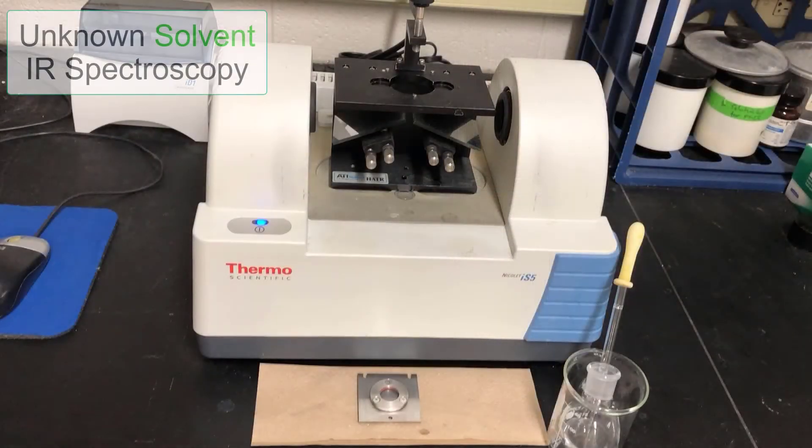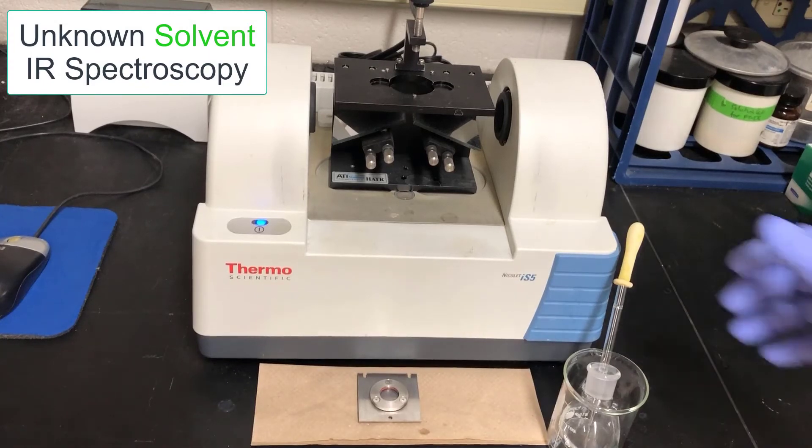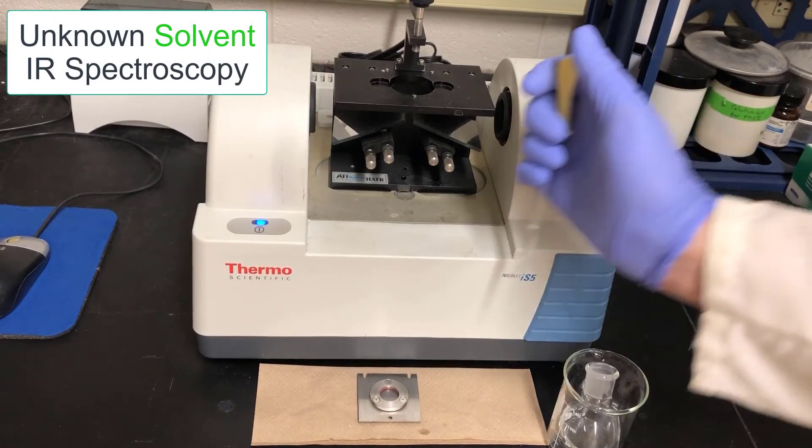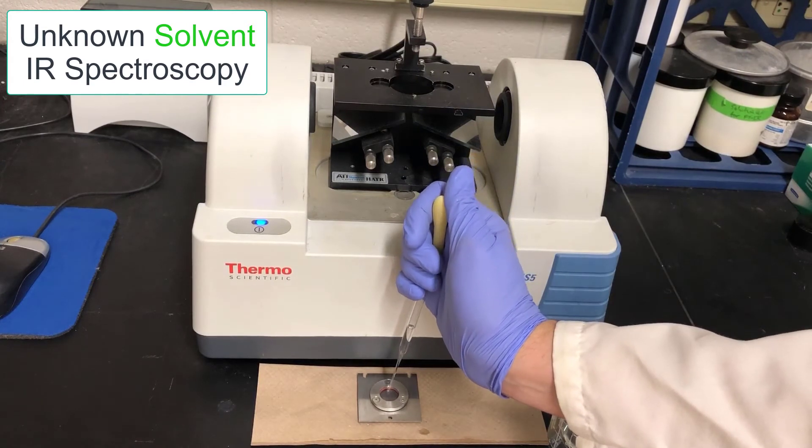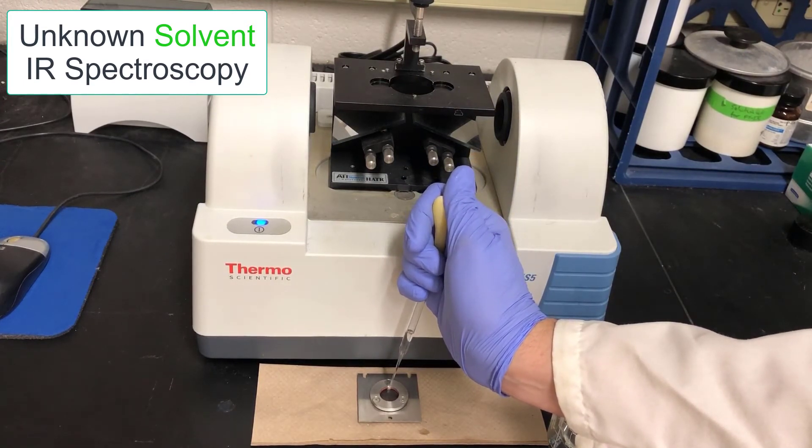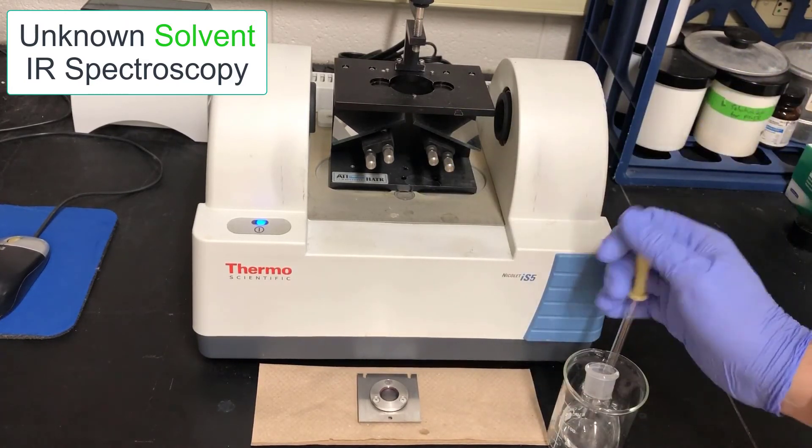Now I'll analyze the unknown solvent by IR spectroscopy. Acquiring IR data has been described in previous videos, but here with the solvents it's just a little different in that these are very volatile materials and if you only put a little bit in the well it'll probably evaporate before you can acquire a spectrum on it.